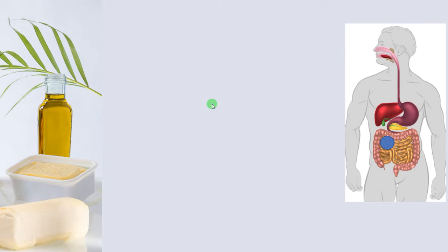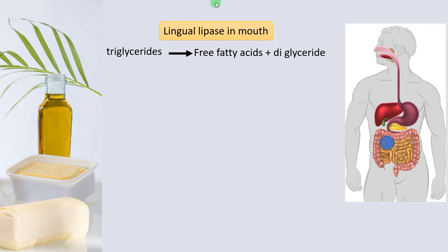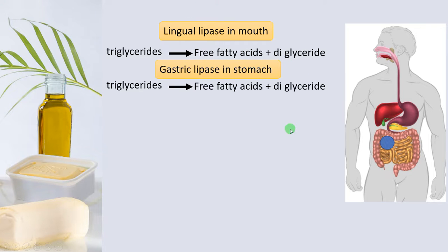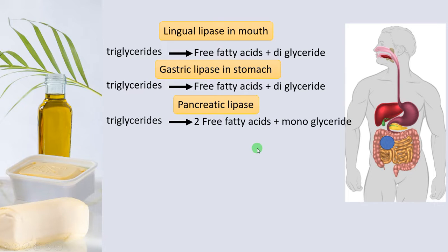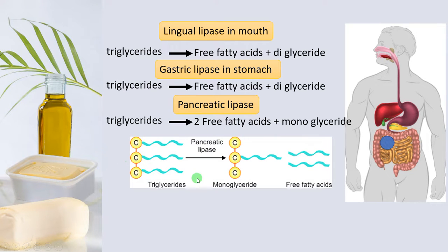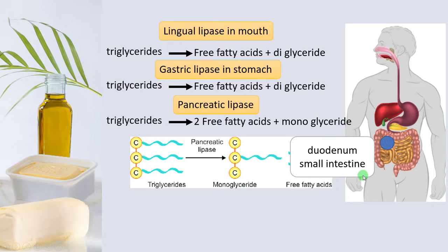The digestion of fats or lipids starts in the mouth by means of lingual lipase, which converts triglycerides to free fatty acids and diglycerides. Then gastric lipase in the stomach also converts triglycerides to free fatty acids and diglycerides. Then pancreatic lipase converts triglycerides to two free fatty acids plus a monoglyceride. This is a triglyceride — a glycerol with three fatty acids attached — and pancreatic lipase converts it into a monoglyceride and two fatty acid chains. The major site of lipid digestion and absorption is the duodenum of the small intestine.